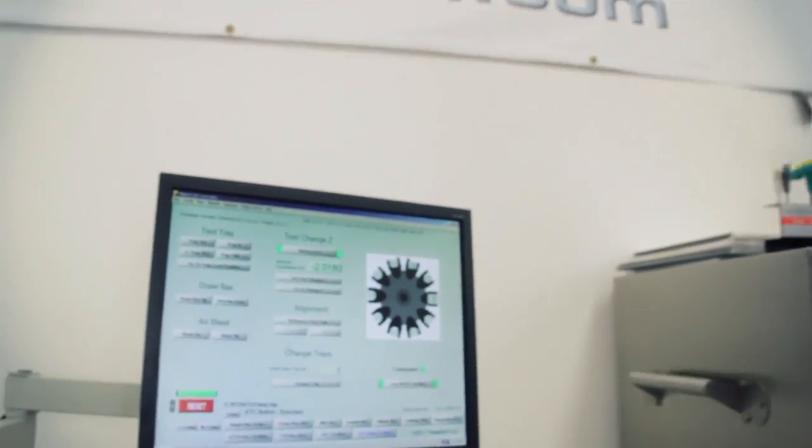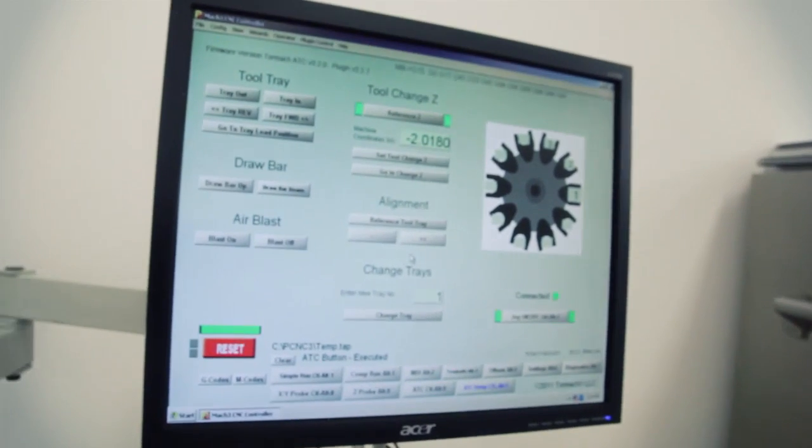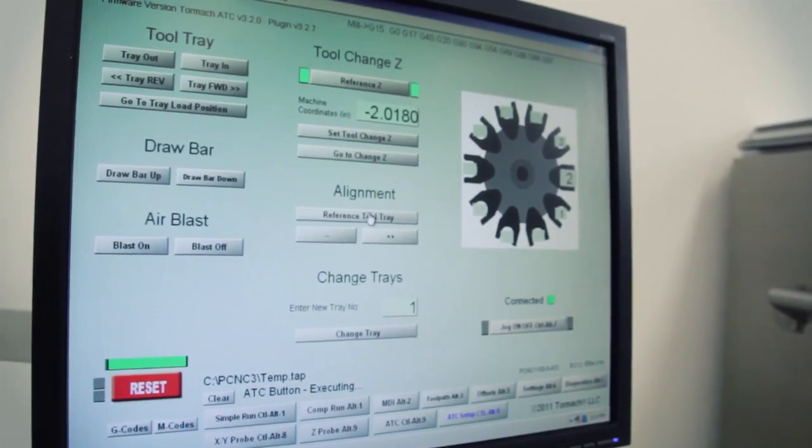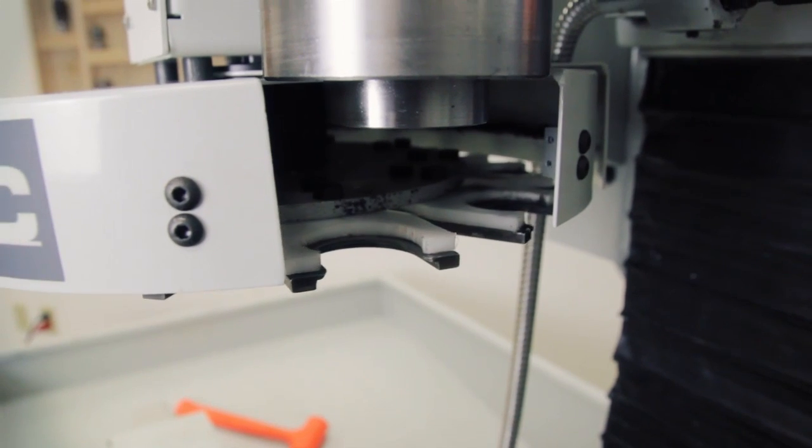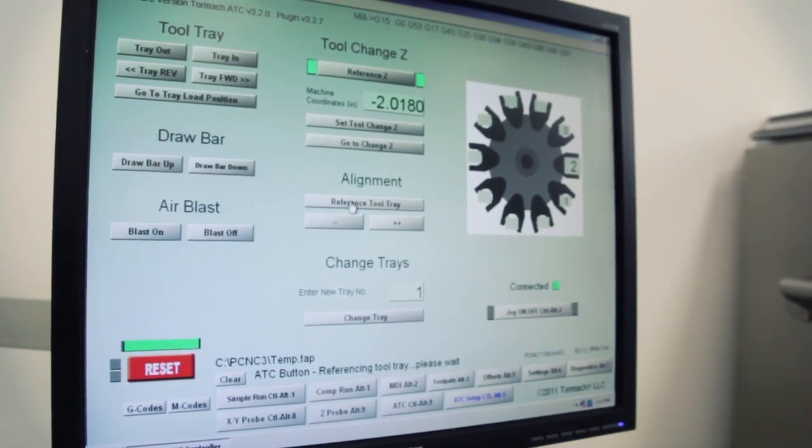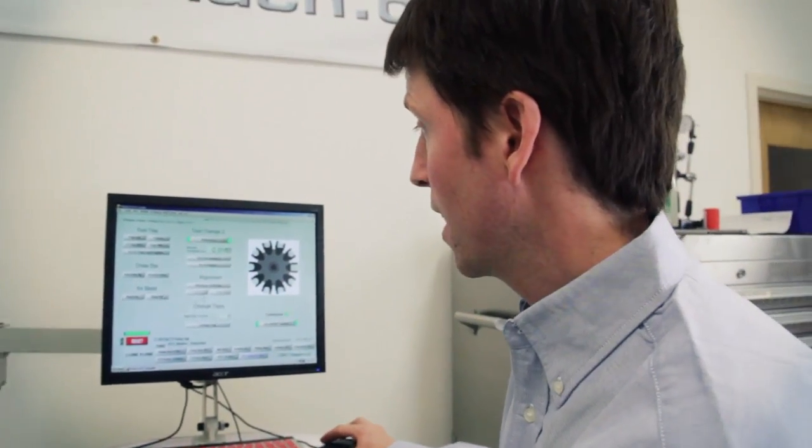On the ATC setup screen, under the alignment section, you'll see three buttons. Reference tool tray. It just indexes the tool tray. You'll see minus minus and plus plus buttons. These two buttons adjust the angular position of the tool holding fork. This fork is not centered directly under the spindle. So I'm going to go ahead and click on that minus minus button until it is centered right under that spindle nose.